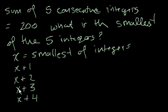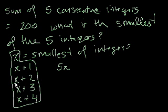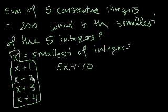We know that the sum of these five consecutive integers is 200. So what is the sum of these five expressions? We have 5 x's, so x+x+x+x+x equals 5x. And then 1+2+3+4 equals 10. So the sum of these five integers is 5x plus 10, and we know that equals 200.